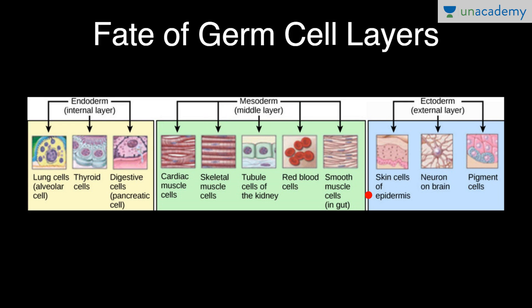Skin cells of epidermis, neurons in brain, and pigment cells — these structures are derived from ectoderm, which is the external or outermost layer.